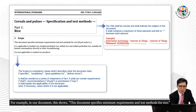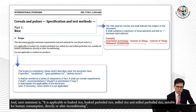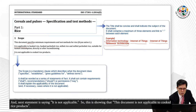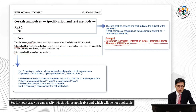For example, in our document, this document specifies minimum requirements and test methods for rice. The next statement is: it is applicable to husked rice and husked parboiled rice suitable for human consumption directly or after reconditioning. And the next statement says it is not applicable — this document is not applicable to cooked rice products. So for your case, you can specify what will be applicable and what will not be applicable.